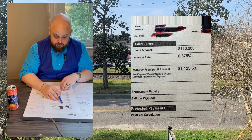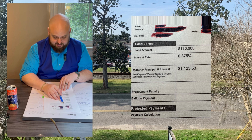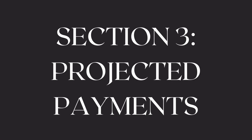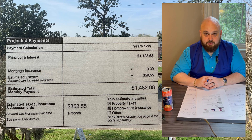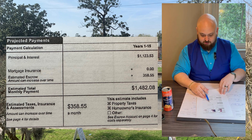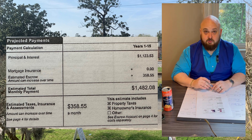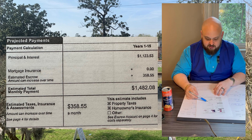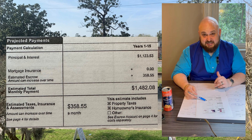If you look here in Section 2, you'll see that the loan amount is $130,000 — that's how much they're borrowing. The interest rate is 6.375%. Monthly principal and interest payment is $1,123.53. It's very important to note this amount will never change. The second sub-payment is mortgage insurance, which is a payment you have to make to cover the bank in loans where you've put less than 20% down on a conventional loan, or through a certain period of time in an FHA or VA loan. In this case, there was zero — they had already put 20% down.